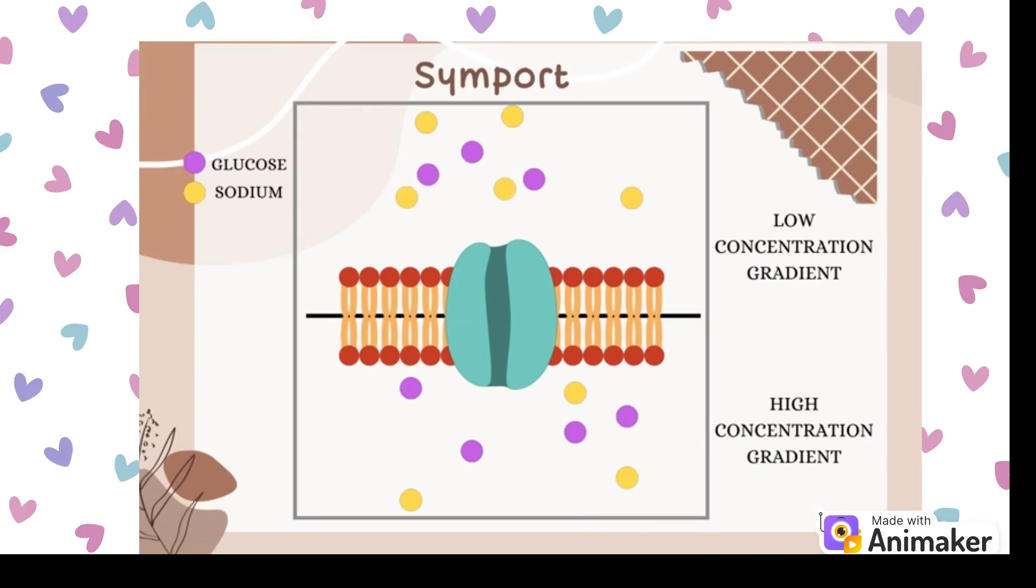In symport, two substances move together in the same direction across the membrane. A common example is sodium and glucose. Sodium moves down its concentration gradient, pulling glucose along into the cell even against glucose's gradient.